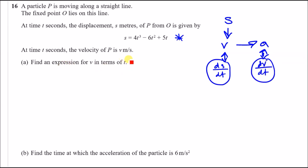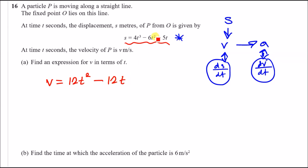To find v, differentiate the displacement equation. To differentiate, drop the power down and multiply, then subtract the power by one. So 3 × 4 = 12, giving 12t². Next: 6 × 2 = 12t. Then differentiating 5t: drop the power 1 down, 1 × 5 = 5, leaving t⁰ = 1, so just +5. Anything to the power 0 is 1, that's why it vanishes. So v = 12t² − 12t + 5.